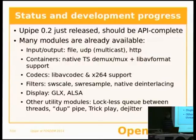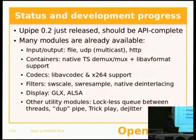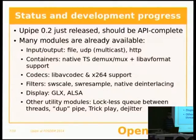About the status: we've just released what we call U-Pipe Preview Release Number 2. We're quite happy with the API — we have no plans to change the module level or application level API for the moment. We may want to improve it by adding new cores to make application developers' lives easier. There are already many modules available. From external libraries, we have support for ffmpeg/libav and x264. We have a few native modules, in particular TS demux and TS mux — this is our core business — and everything you need to read a file or streams from UDP or HTTP. We have utility modules such as dup, which allows you to put a branch in your pipelines, a trick player for jittering of data, and queues of course.